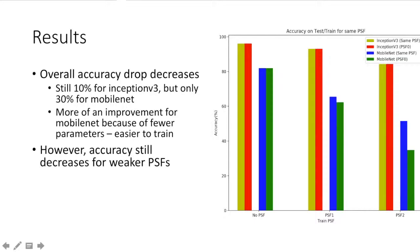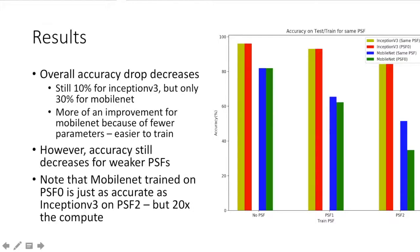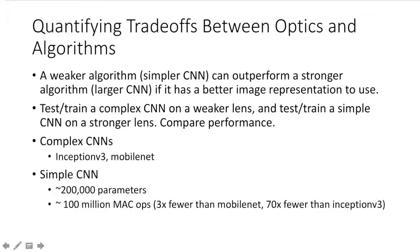However, accuracy still decreases for weaker PSFs. As a motivational reason for the third experiment, you can see that MobileNet trained on PSF0 is just as accurate as Inception v3 trained on PSF2, which suggests that we can save about 20 times the compute by having a more effective optical front end, so we don't have to have all this extra compute power in order to combat the weaker optics. Motivated by that point that a weaker algorithm can outperform a stronger algorithm if it has a better image representation, we introduce a third convolutional neural net with about 200,000 parameters and about three times fewer MAC operations than MobileNet.